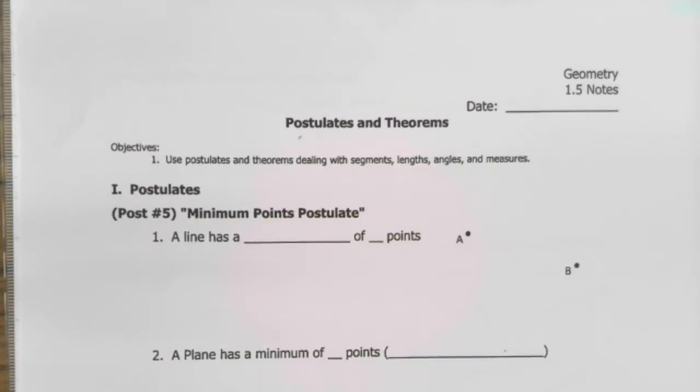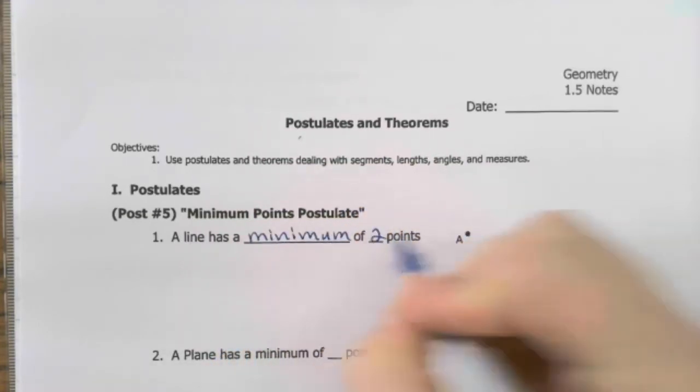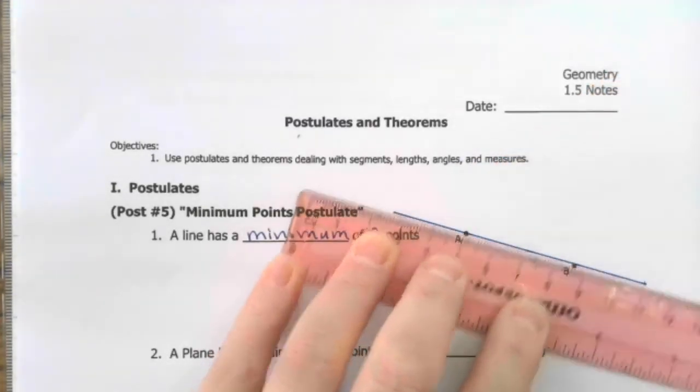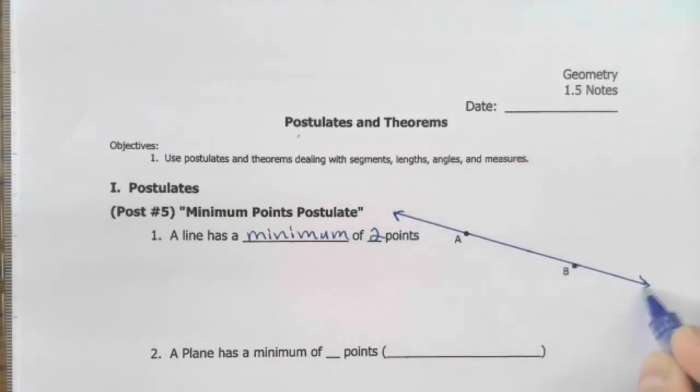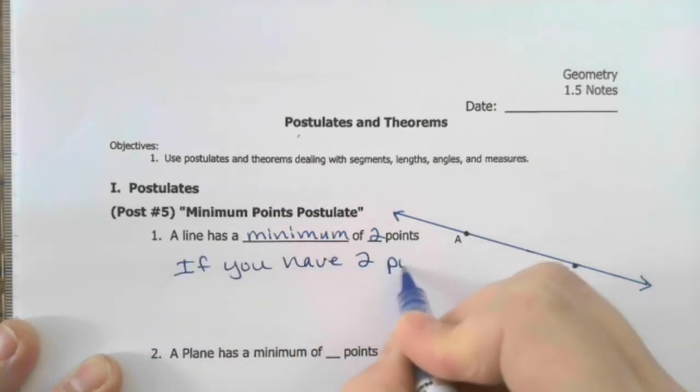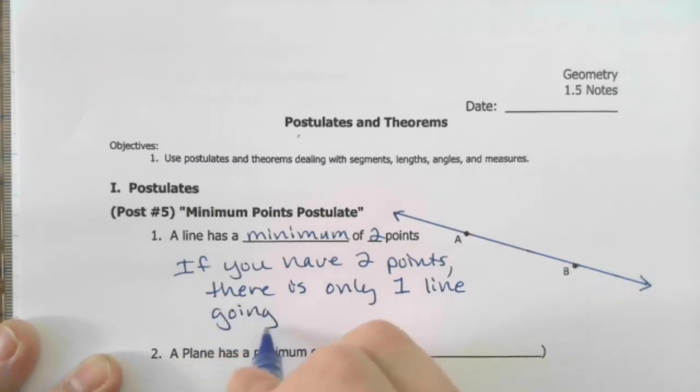All right, Roman numeral 1, postulates. We're going to learn a couple important ones. Minimum points postulate says a line has a minimum of two points. So if you have two points, there's only one line that will go through them.